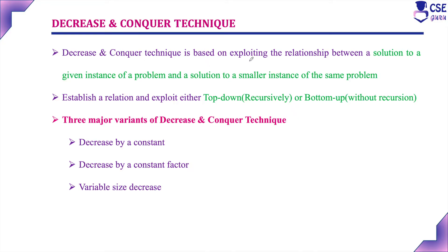This decrease and conquer technique is based on exploiting the relationship between the solution to a given instance — that is the actual problem — and the solution to a smaller instance of the same problem. We reduce the size of the problem to a sub-problem, find the solution for that sub-problem, and apply it to get the solution for the original problem. This method can be implemented either top-down using a recursive function, or bottom-up using an iterative method.